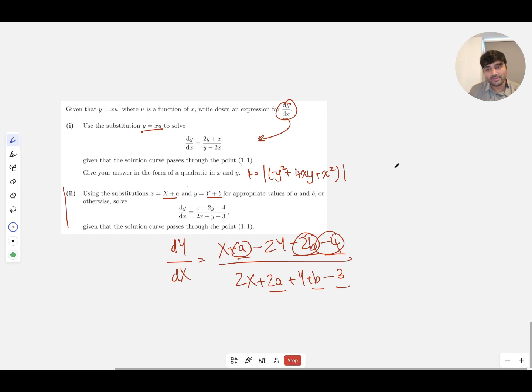So let's just do some very basic simultaneous equations. We want a - 2b - 4 to be 0, and we want 2a + b - 3 to be 0. If you solve these, you get a is 2 and b is -1.